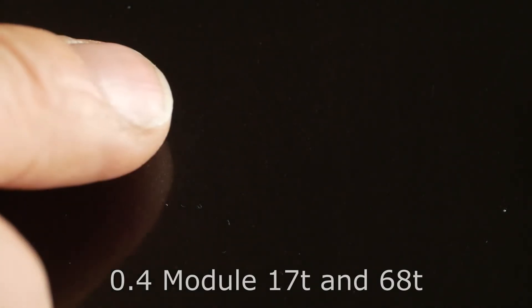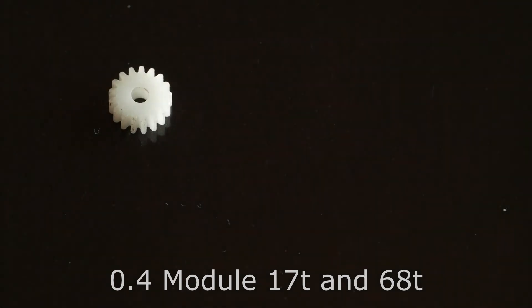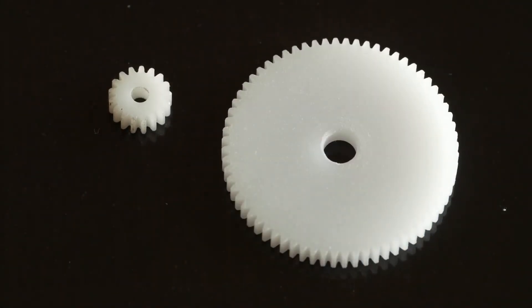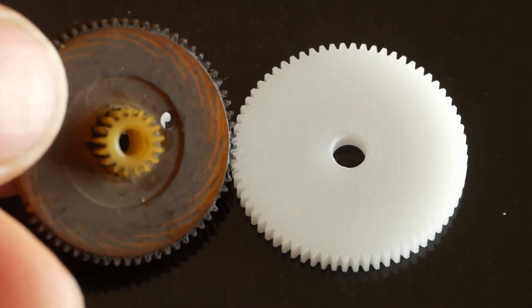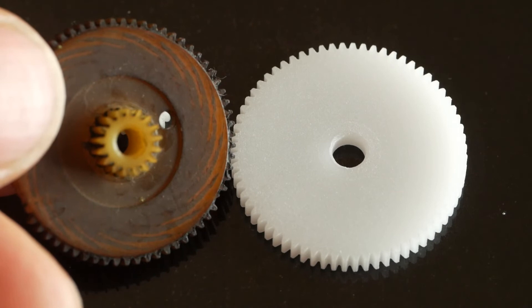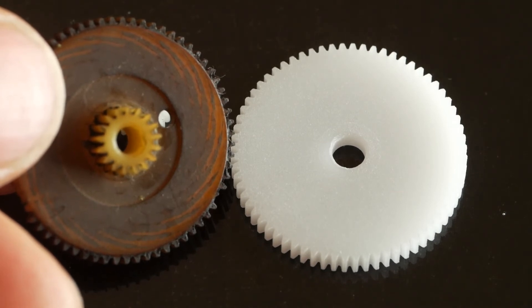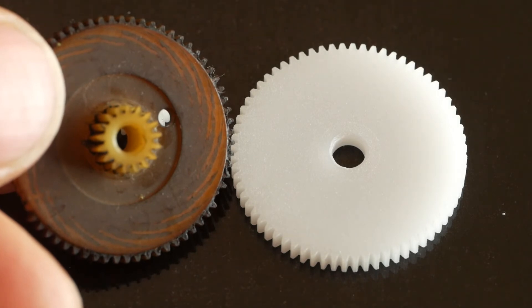Oh yeah, and I nearly forgot. The gears I fitted are both 0.4 module, the smaller one is 17 teeth and the larger one is 68 teeth. They're both 3mm thick, which adds up to slightly less than the original 7.2mm, so I made my brass insert the correct length to reduce end float. I'll put details of the gears down in the description.